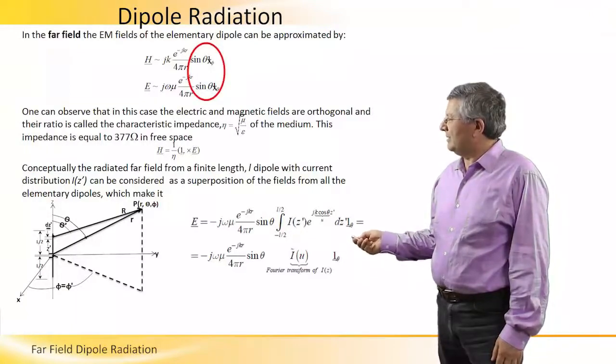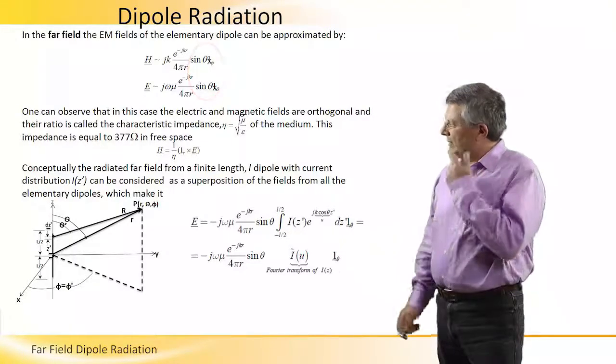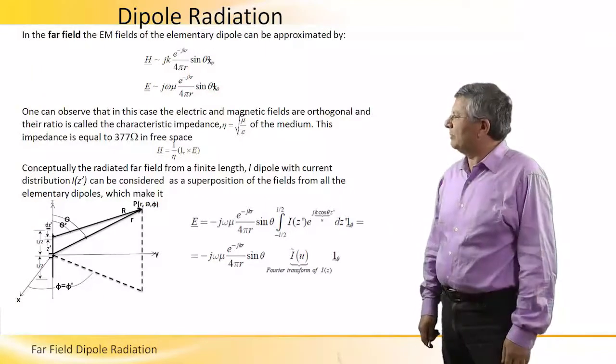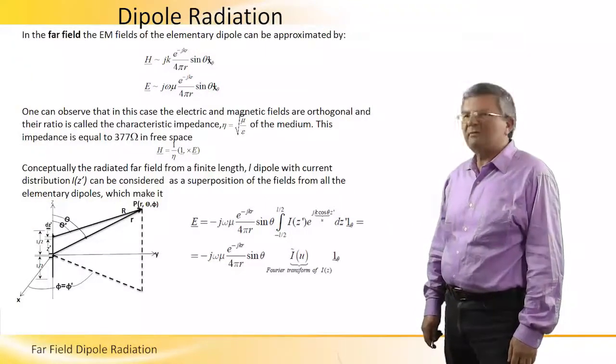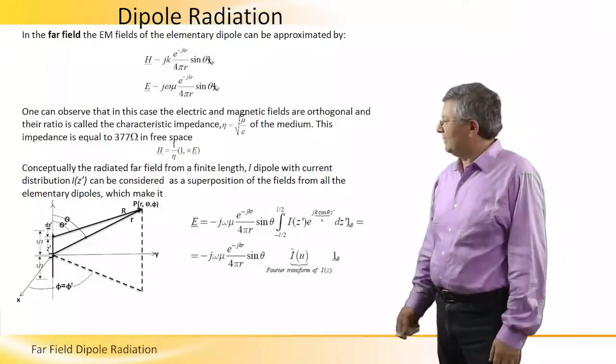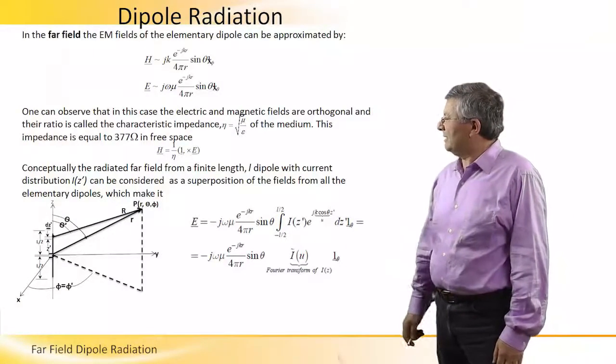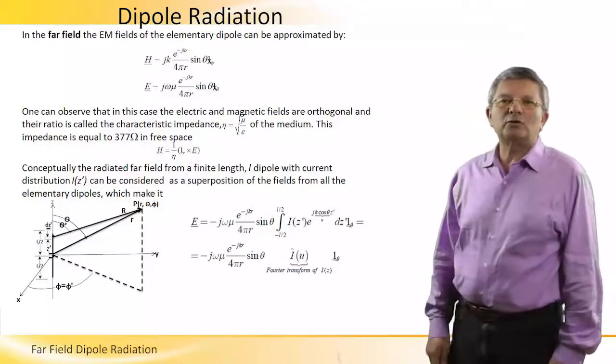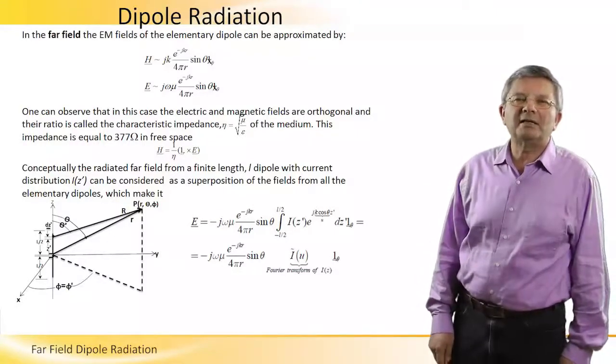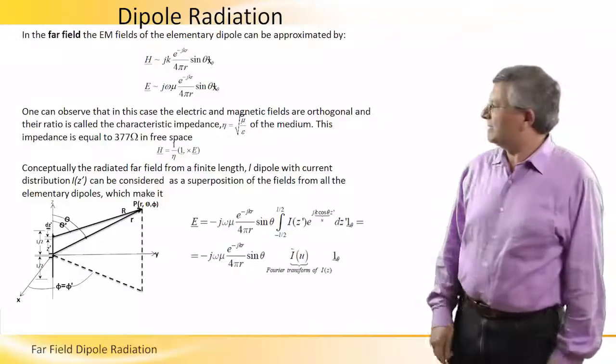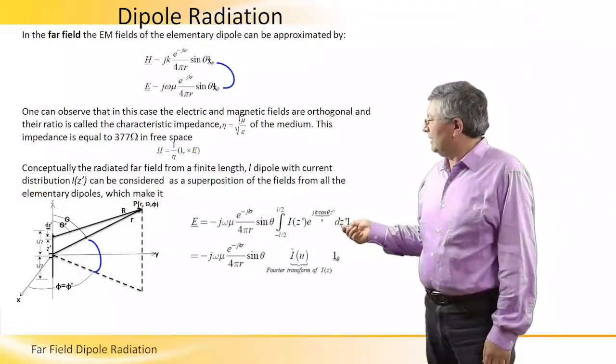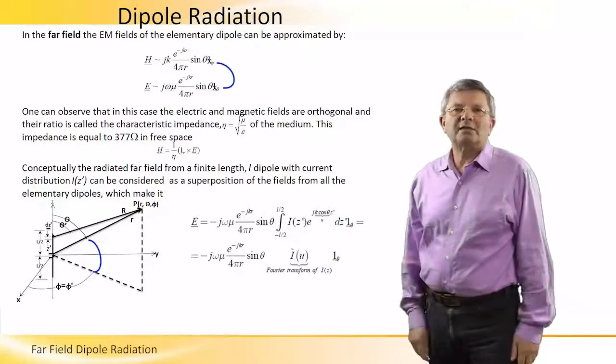Sine theta in this case represents the angular dependence of both electric and magnetic fields on theta. Another interesting observation is that the electric and magnetic fields are orthogonal vectorially, since the unit vectors 1 theta and 1 phi are orthogonal in space.